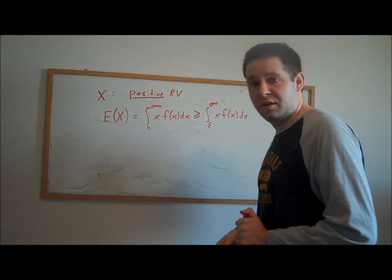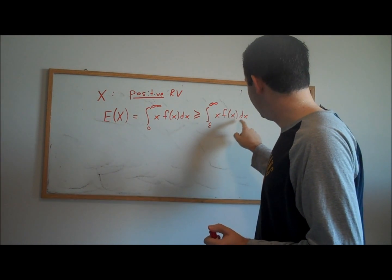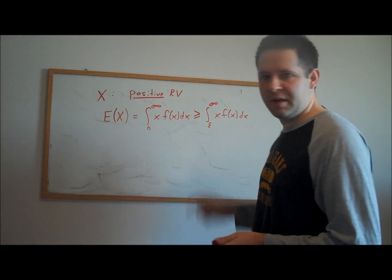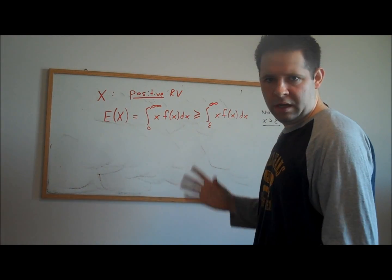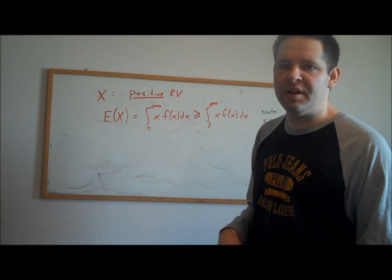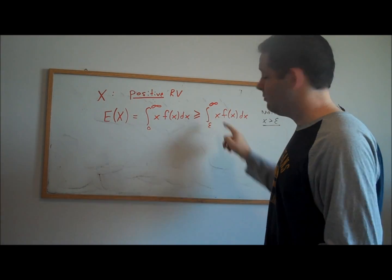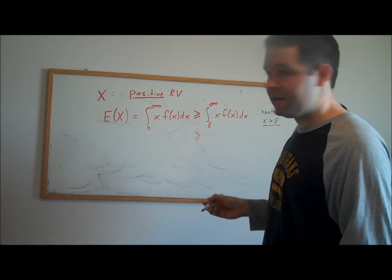The next thing that we can notice is that for any X between epsilon and infinity, X is bigger than epsilon. So what we could do if we wanted to be really mean to this expectation and lop it down to size, is we could change all of those X's that are bigger than epsilon to epsilon. That's going to reduce the size of this integral.